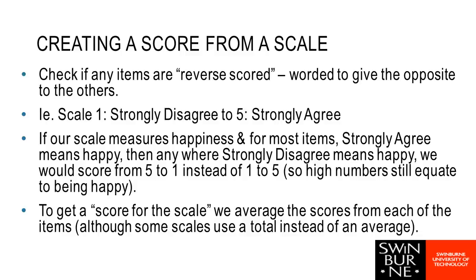A reverse scored item is where the wording is in the opposite direction to the others. For instance, on a happiness scale, if most items have strongly agree meaning happy, any item where strongly disagree means happy would be numbered 5, 4, 3, 2, 1 instead of 1, 2, 3, 4, 5 — so that a 5 still equates to happy. Participants would just see 1 through 5 down the page, but when scoring we'd reverse these so all numbers are consistent: 1 means unhappy, 5 means happy.